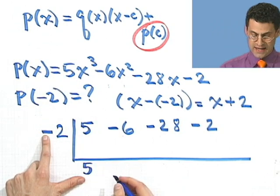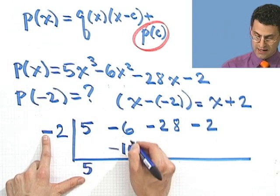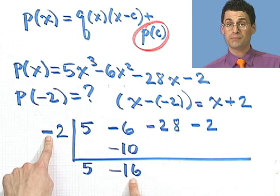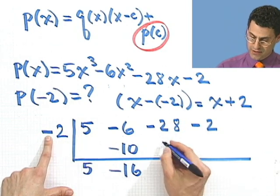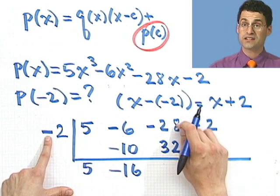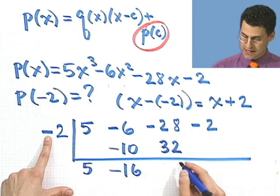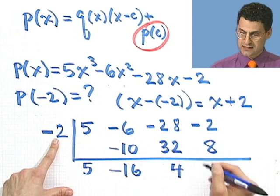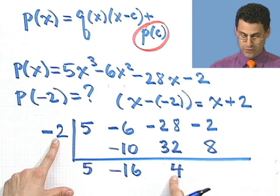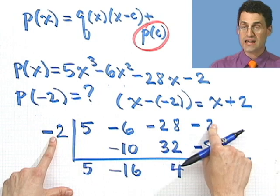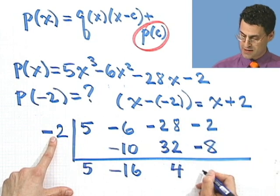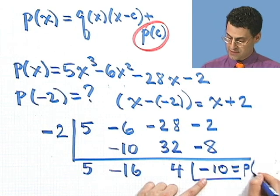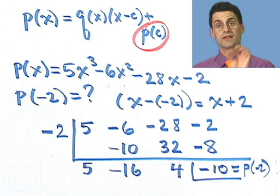I go through synthetic division. I bring down the 5, multiply it by negative 2, and get negative 10. Add here and get negative 16. I multiply negative 16 by negative 2 and get positive 32. I take positive 32 and add it to negative 28, and I get a net gain of 4. Then 4 times negative 2 is negative 8. And negative 8 plus negative 2 is negative 10. And that's the remainder — so in fact, that should equal p evaluated at negative 2.